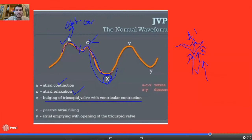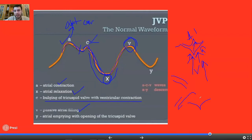The V wave is due to passive atrial filling with the tricuspid valve closed. Initially the atria have relaxed, and now an upward wave occurs as pressure starts to rise again — the blood flowing in from the superior and inferior vena cava fills into the right atrium with the tricuspid valve still closed, exerting pressure on the right atrium, and that produces the V wave.